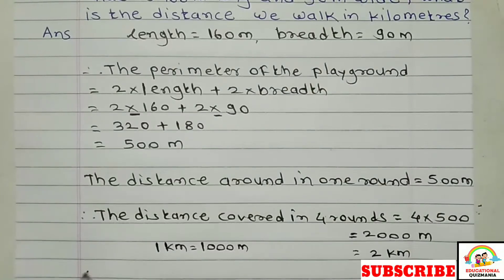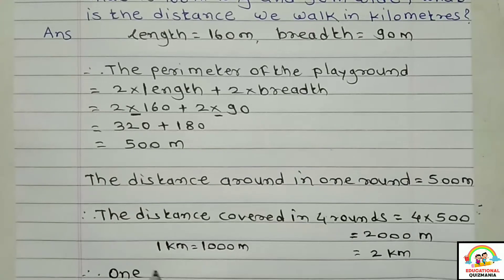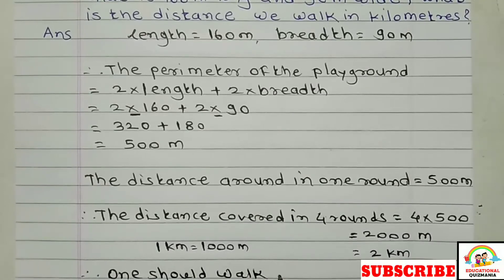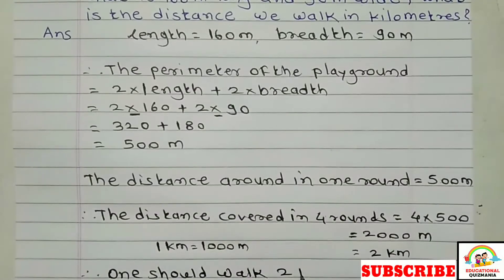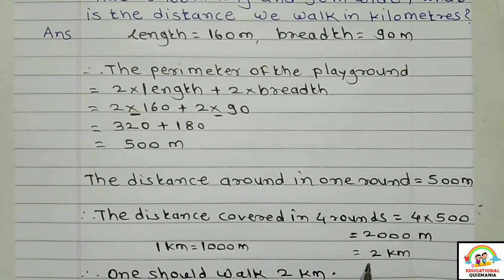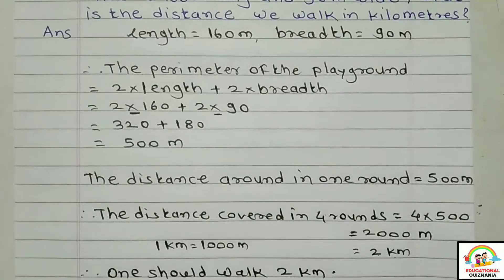Therefore, one should walk 2,000 meters. Taking 4 rounds around that field, the distance covered is 2 kilometers.